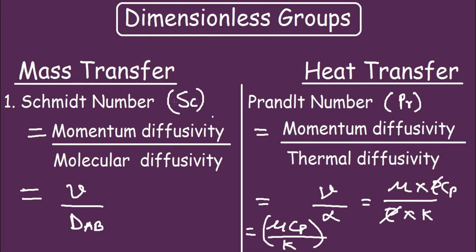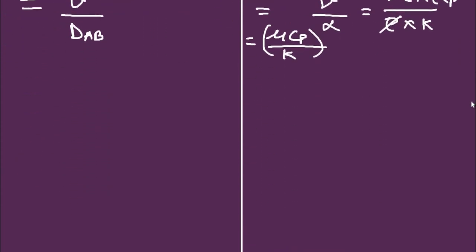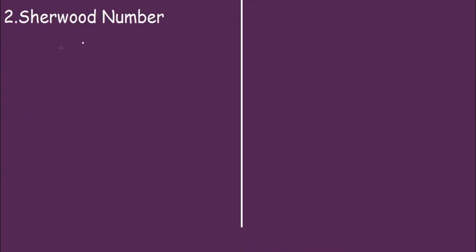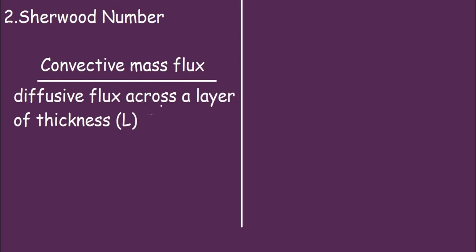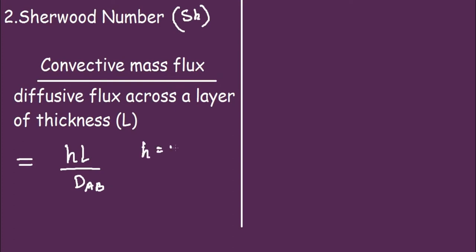Prandtl number and Schmidt number are analogous numbers for heat and mass transfer respectively. The second important group is the Sherwood number. It is the ratio of convective mass flux to diffusive flux across a layer of thickness L, denoted by Sh. Mathematically, Sh equals H_M times L divided by D, where H_M is the mass transfer coefficient.